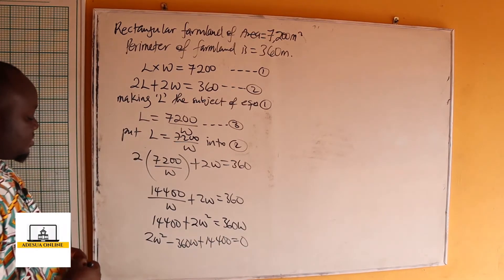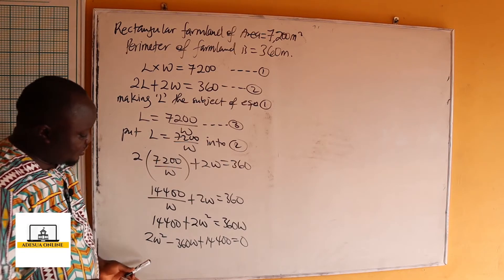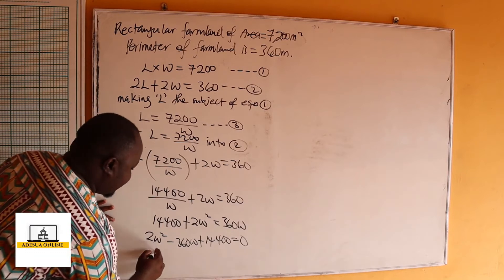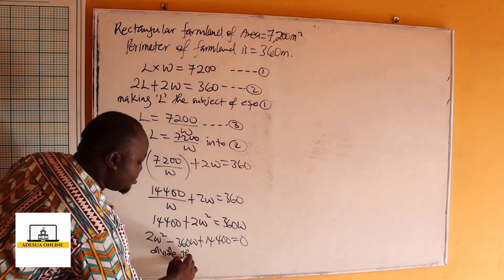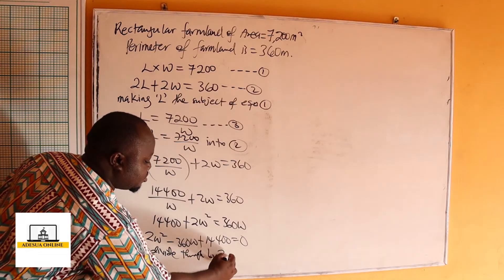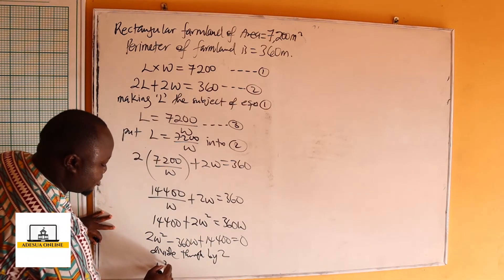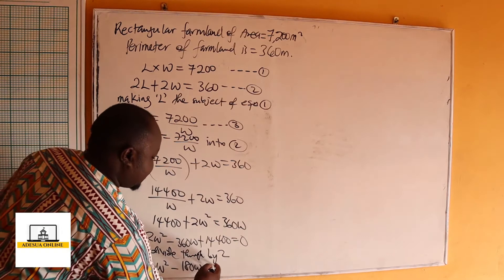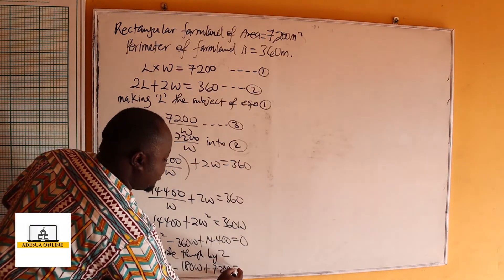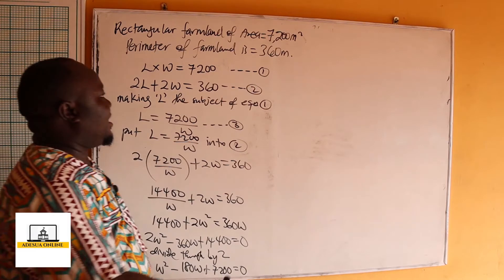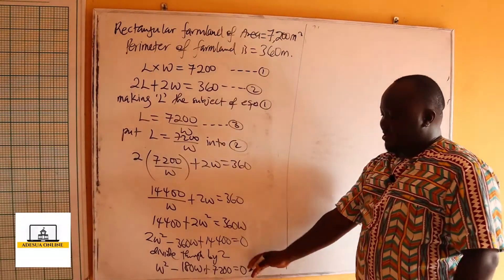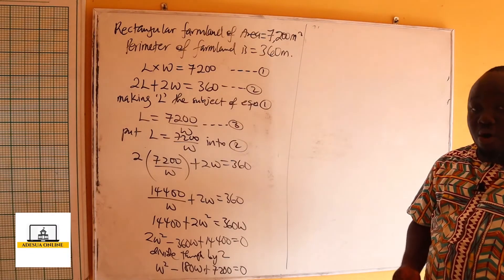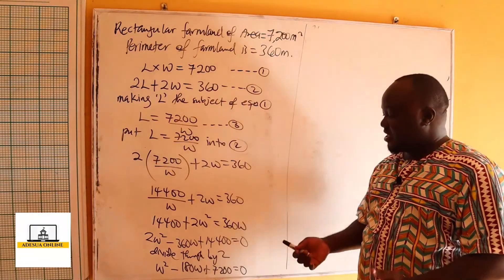We equate it to zero. Since 2 can divide through the whole equation, we divide through by 2, giving us W² minus 180W plus 7,200 equals 0. Since we have this as our quadratic equation, we are going to solve this using factorization.